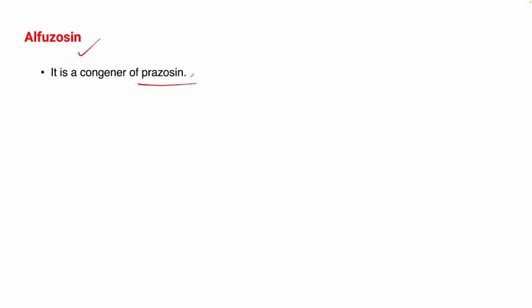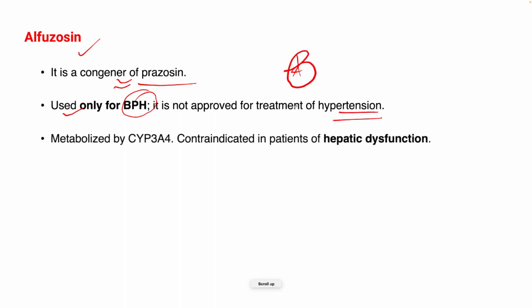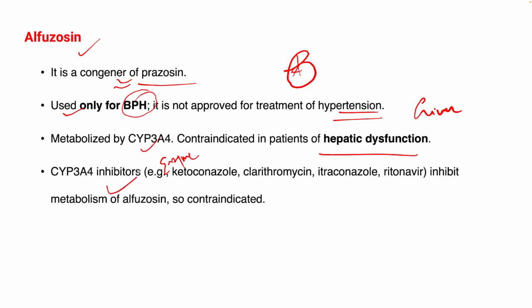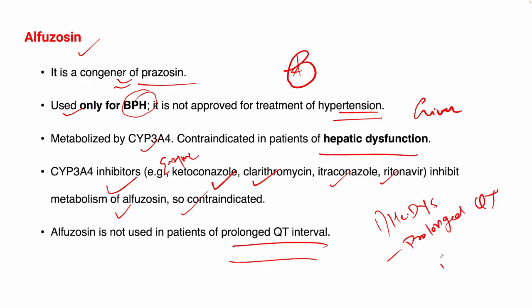Alfuzosin is a congener of prazosin with similar effects. It is used only for BPH and is not approved for the treatment of hypertension. It is metabolized by the CYP3A4 enzyme and is contraindicated in patients with hepatic dysfunction. CYP3A4 inhibitors such as ketoconazole, clarithromycin, itraconazole, and ritonavir inhibit the metabolism of alfuzosin and are therefore contraindicated. Alfuzosin is also contraindicated in patients with prolonged QT interval.